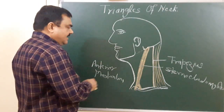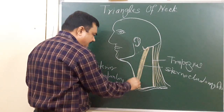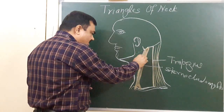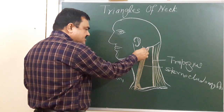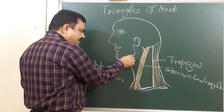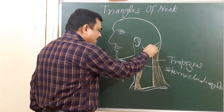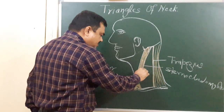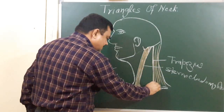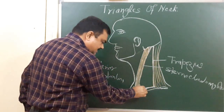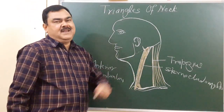The anterior triangle is bounded anteriorly by the anterior median line, posteriorly by the anterior border of the sternocleidomastoid muscle, and superiorly by the base of the mandible and the imaginary line from the angle of the mandible to the mastoid process. The posterior triangle is bounded anteriorly by the posterior border of the sternocleidomastoid, and inferiorly by the clavicle.